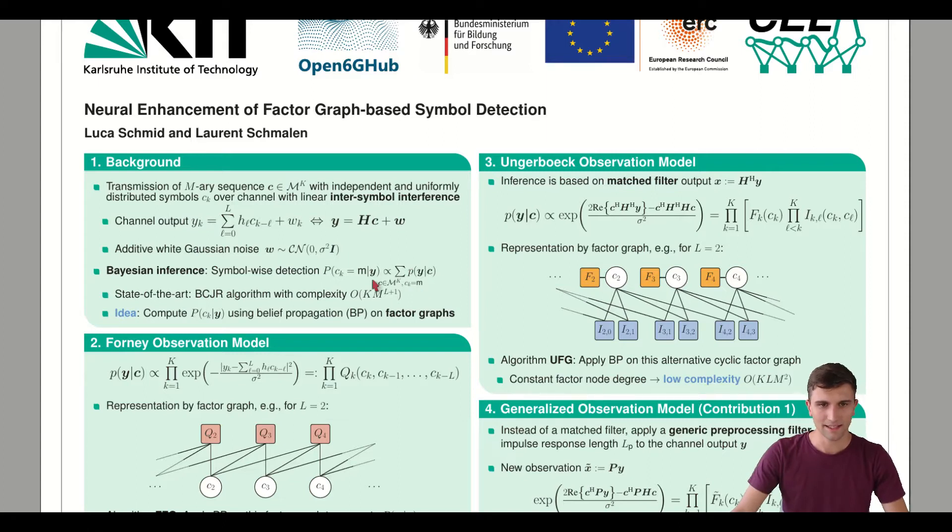Exactly this marginalization is the challenge here, since it can get quite computationally complex if the block length K is high or if our symbol constellation is large, the number of possible symbols M.